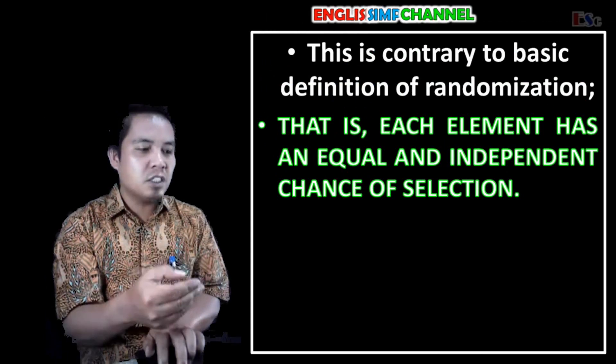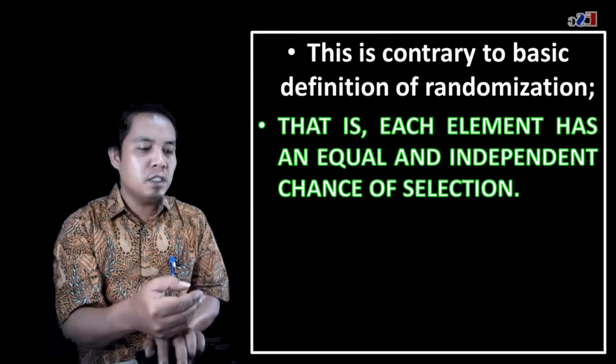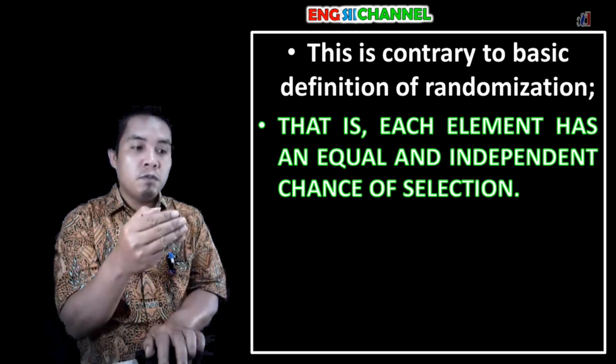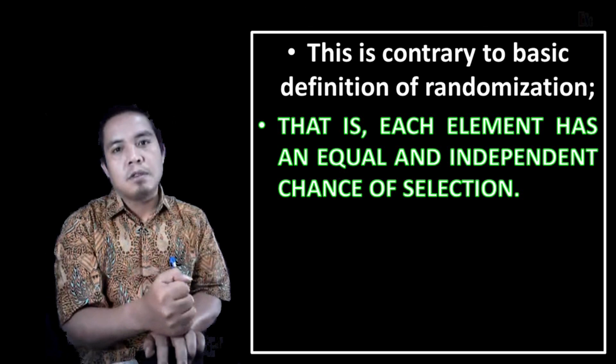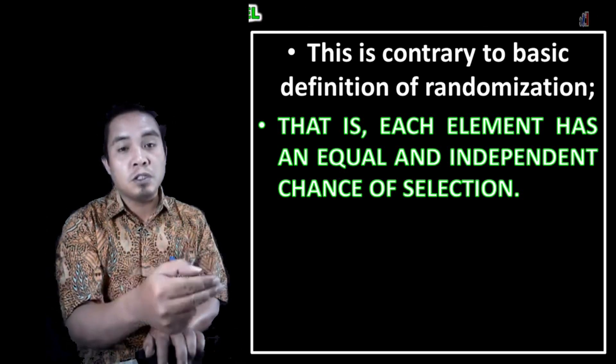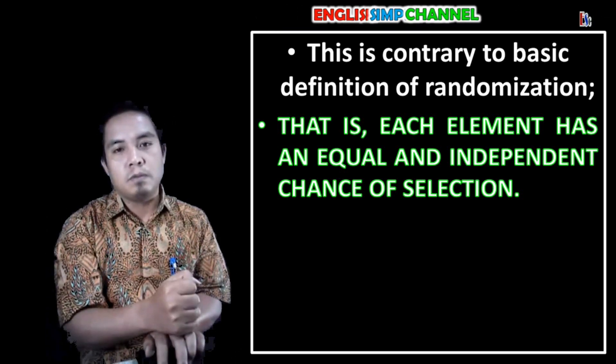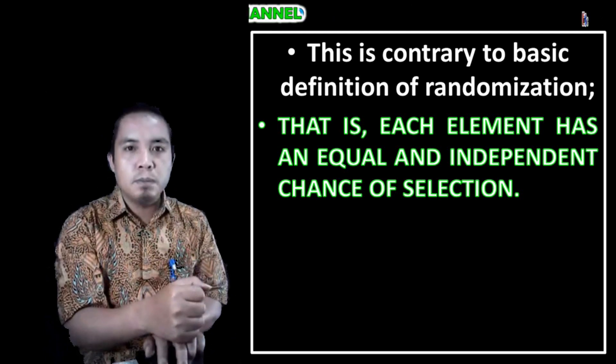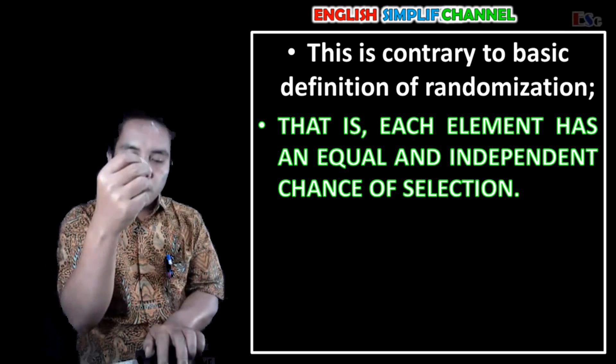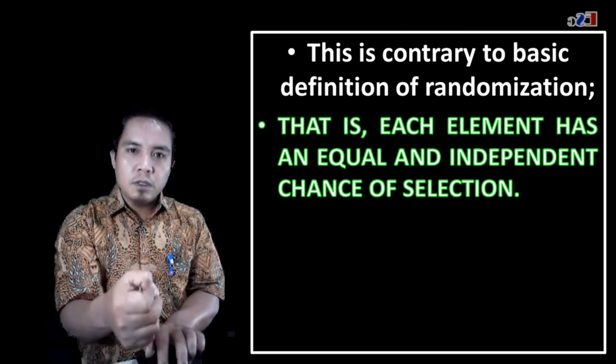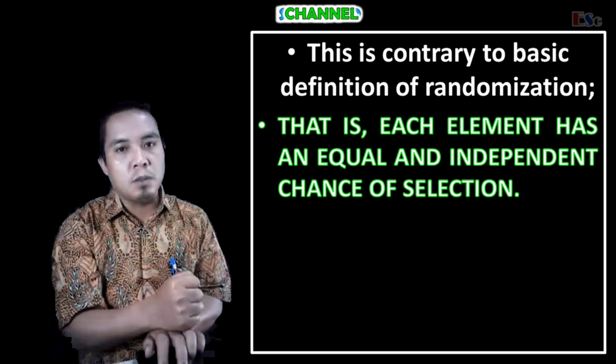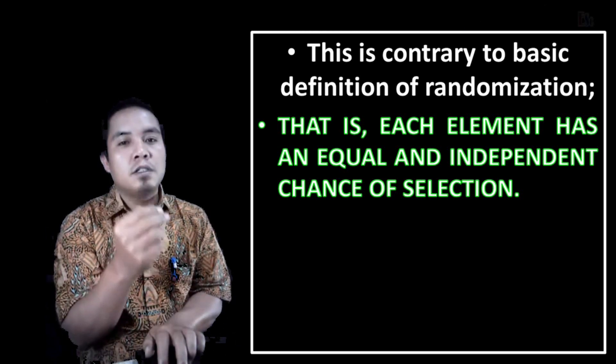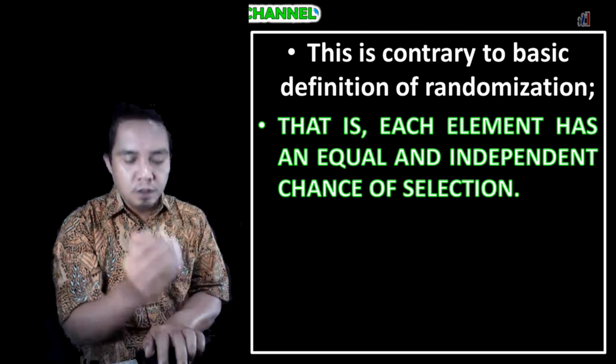Because as we had already discussed, the probability is not equal from the first, second, and so on until we get all the sample from the population. That's why this is questionable. Therefore, we need to do taking the sample by replacement.